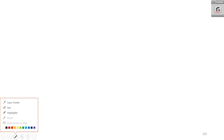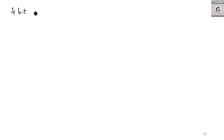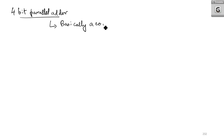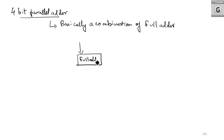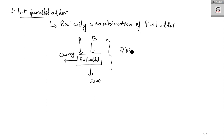To deal with a 4-bit parallel adder, it is basically a combination of full adders. If you are drawing the block diagram of a full adder, the inputs are A and B, and the outputs are sum and carry. This is basically a 2-bit adder, where A and B are the 2 bits which are required to be added.